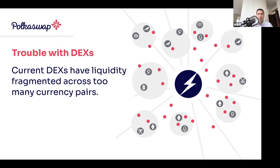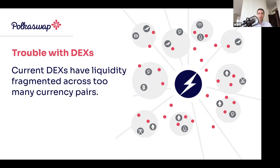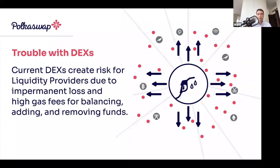Current DEXes also have a lot of liquidity fragmentation. For example, Uniswap v2 emphasizes ease of creating token pairs, but it comes at the expense of liquidity being very fragmented. You can create any token pairs you want without going through a hub token, but actually going through a hub token makes trade routing much more efficient and you can get better price quotes.